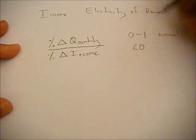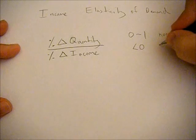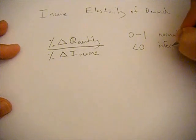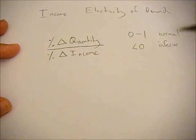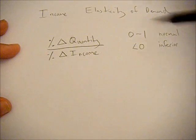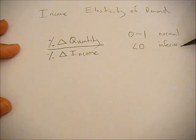If the income elasticity of demand is negative or below zero, it's an inferior good. It's an inferior good because as your income rises you actually consume less of the good, therefore we classify it as inferior.